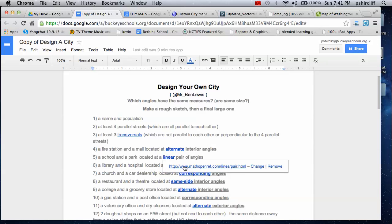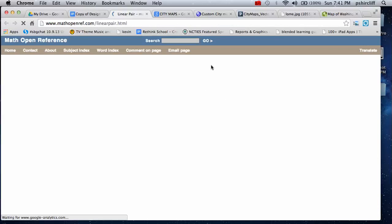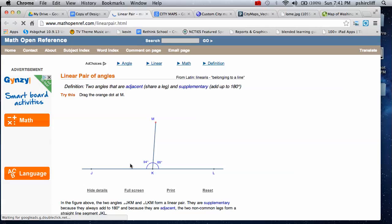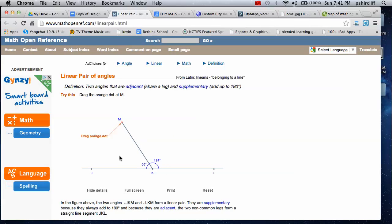A linear pair - it's just a set of angles that make up a line. That's all it is. So it's just 50 here and here. 56 and 124 are a linear pair.